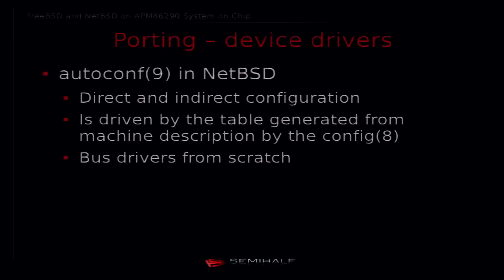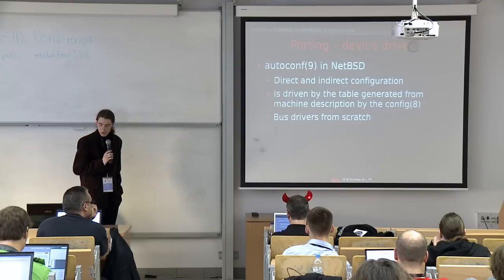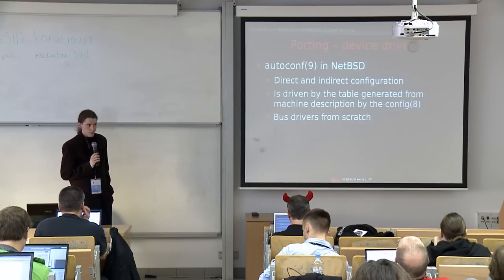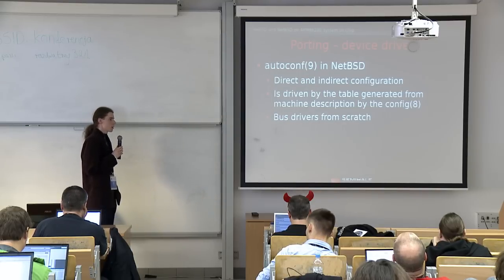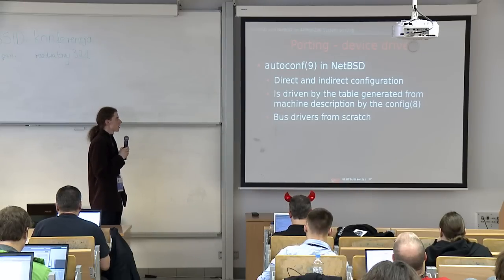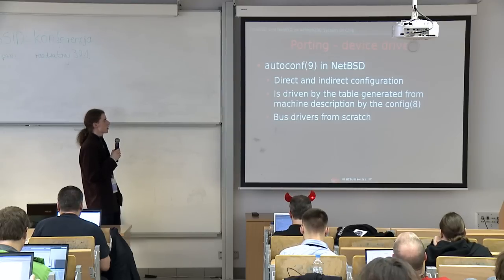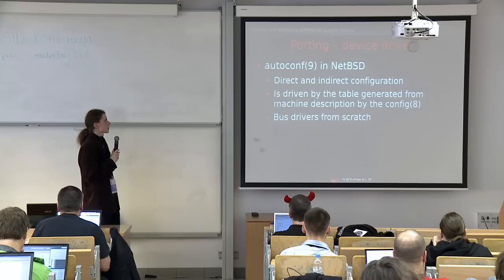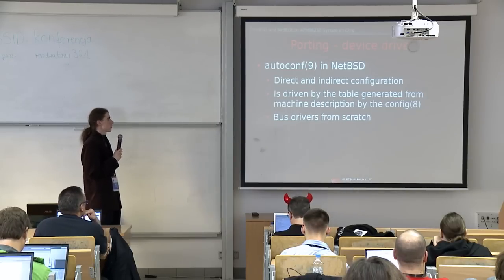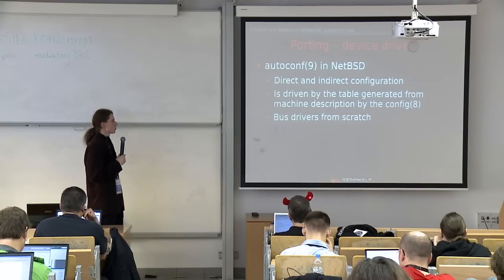In NetBSD there is an auto-configuration process. During config, a table with device description is created. There are two possible ways to configure a device: direct and indirect configuration. In direct configuration, the bus is fully aware of the device in the system even if the corresponding driver is not present. In indirect configuration, the device has to probe the bus for the resource. In NetBSD we had to write bus drivers from scratch, whereas on FreeBSD we were able to use the ready-made FDT bus and simple bus.